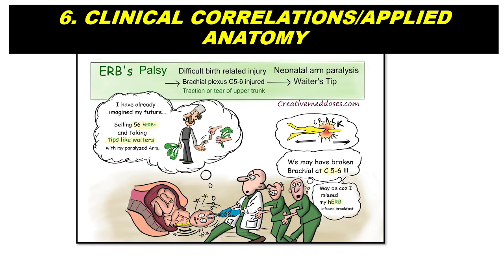Tip six: clinical correlations and applied anatomy. These are very, very important. You need to write at least one or two applied anatomical aspects for each question, especially for main questions and short essays. For example, Erb's palsy is a very commonly asked question. Whenever brachial plexus is asked in the exam, if you write Erb's palsy and Klumpke's palsy, that will give you more marks.